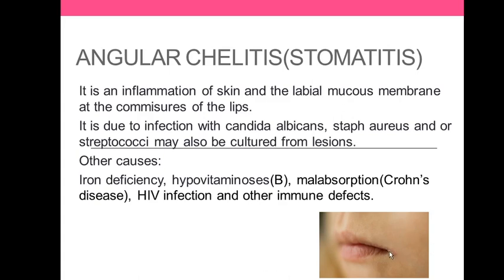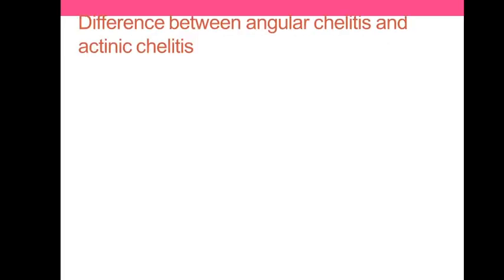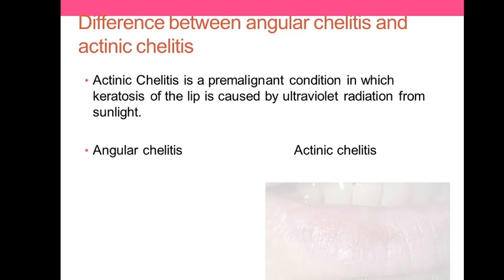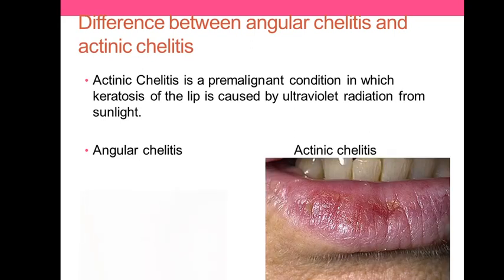As you can see in the image, it can also be found in kids at the sides of the mouth, due to iron deficiency, hypovitaminosis B, malabsorption like Crohn's disease, HIV infection, or other immune defects. This is very common in clinical practice and frequently appears in exams, so it's an important topic.